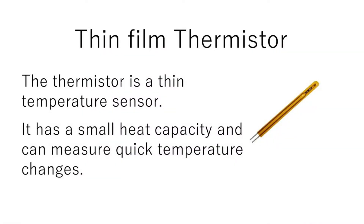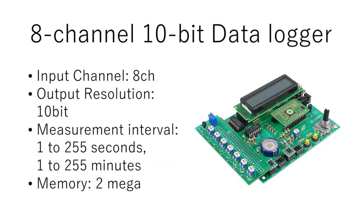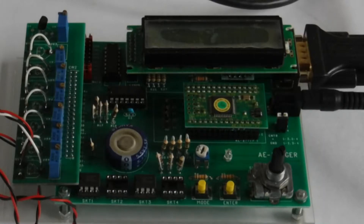A thin film thermistor is a temperature sensor and can measure quick temperature changes. This data logger has an AD converter and can convert analog inputs into digital output. It can measure at one second intervals.